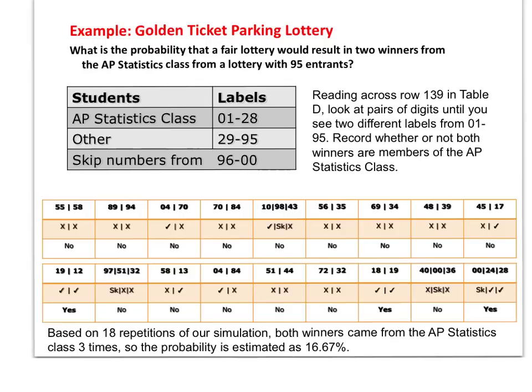We're going to look at table D in the random number table, which is in the back of the book, looking at row 139. We're going to look at pairs of digits until we see two different labels from 01 to 95, and record whether they're both from the AP stats class or not. For example, if I look at the first two numbers in that row, I see the numbers 55 and 58. Both those numbers are other. So they did not both come from the AP stats students. Remember, they have to be the numbers 1 to 28. So the next pair of numbers are 89 and 94. Again, those are others. 04 and 70. One was an AP stats student, but one was not. Then 70 and 84, both came from outside AP stats. Now notice here, when I looked at the next pair of numbers, I actually ran across the number 98, which is not a number that we're going to use for our simulation. So we just skip it and go to the next student number. So 10 and 43. And again, 10 came from the AP stats class, 43 did not.